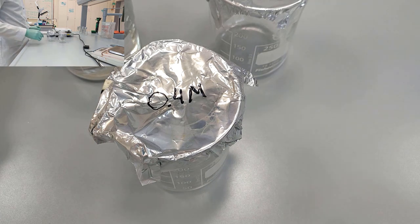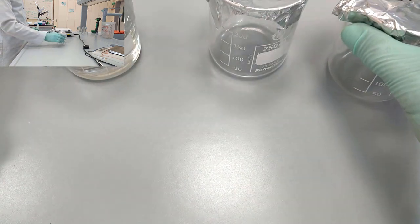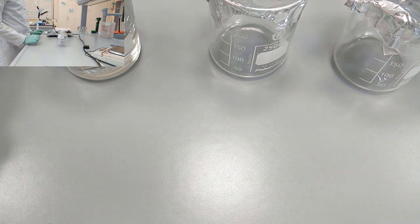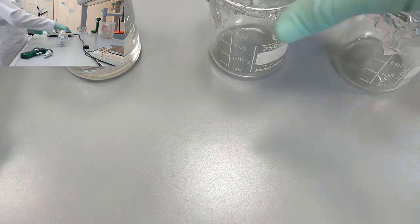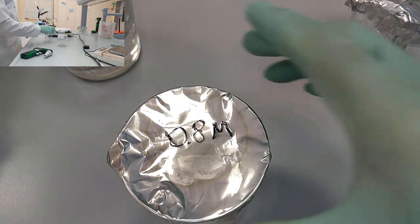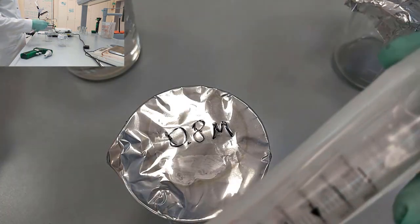As we said in the first part of the video, we need to take 30 ml of 1.2 molar glucose to dilute it to 0.8 molar glucose.